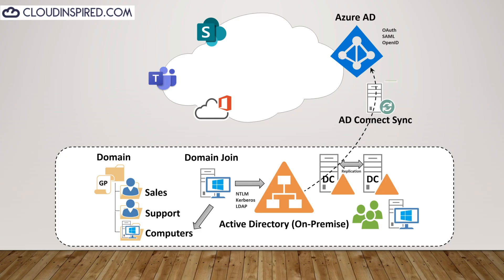Azure AD Connect is Microsoft's solution to enable hybrid Windows AD and Azure AD deployment. Azure AD Connect syncs users and groups between the on-premise domain controllers and the cloud. It also provides password hash synchronization, pass-through authentication, and federation. This solves the problem and allows users to have the same user ID and password on-premise and in the cloud to access cloud applications using single sign-on.